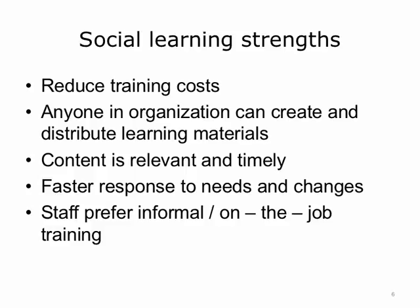Social learning may not seem like a good training approach, but it has many things in common with the principles of adult learning discussed in the first couple units of this component. Some strengths of social learning in the workplace are: it reduces training costs by leveraging workers to create training materials. Now anyone in an organization can create and distribute learning materials such as short videos, fact sheets, or a PowerPoint slide deck. The content is relevant, timely, and personalized by employees working on the job. There is a faster response to the needs of staff and organizational changes. Most adult learners prefer on-the-job training compared to classroom training, and if this can be accomplished with technology instead of individual mentoring, the organization can reduce overall training costs.